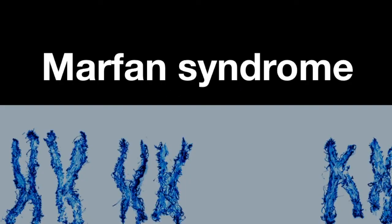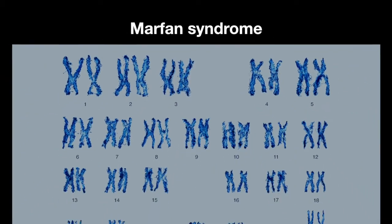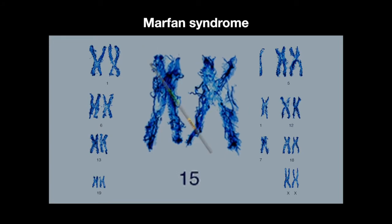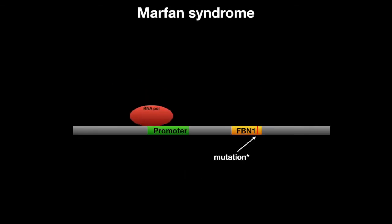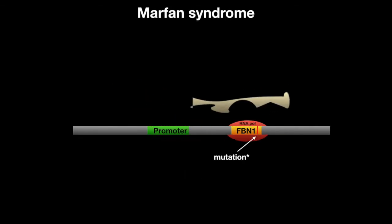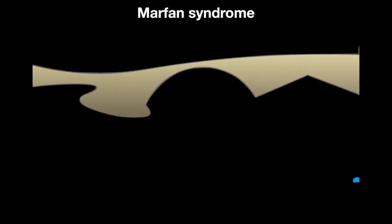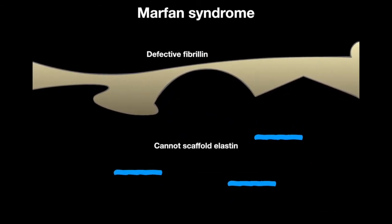Marfan syndrome is a disorder on chromosome 15 caused by the FBN1 gene. It is mutated, which then produces defective fibrillin, which normally scaffolds the elastin.